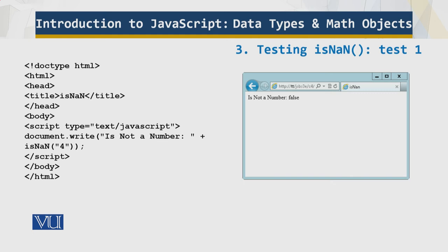The function is not a number returns false from this expression because the integer value four is a number. This is a number and it returns false. Remember that the meaning of this function is, is four not a number? Well, four is a number. So the result is false. I believe you understand this. So this is the test one.